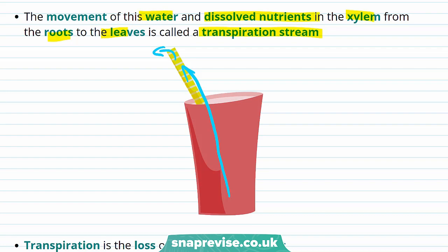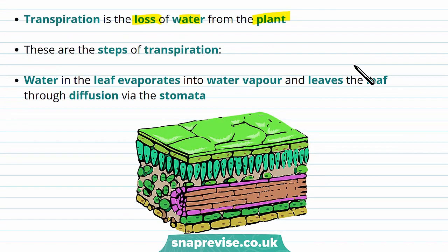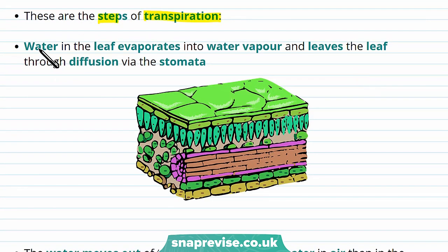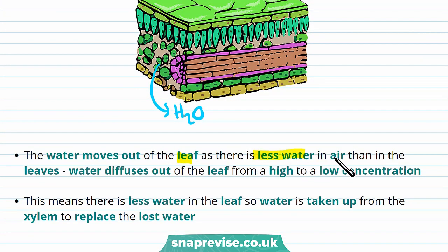What is transpiration exactly? Transpiration is the loss of water from the plant. As water evaporates, it diffuses from the plant. Water in the leaf evaporates into water vapour and leaves the leaf through diffusion by the stomata, through the underside of the leaf. Water moves out of the leaf as there is less water in the air than in the leaves, so water diffuses out from a high to a low concentration — down the concentration gradient.